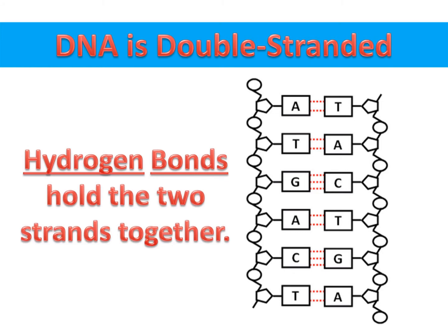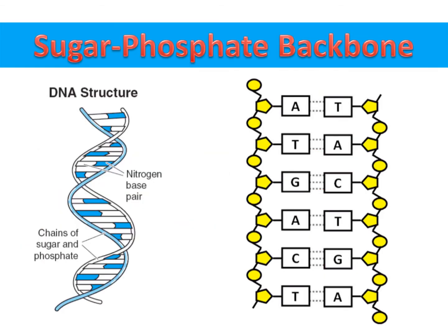DNA is a double-stranded molecule. Hydrogen bonds between the nitrogen bases hold the two strands together. Along the outside edges of the DNA molecule, you'll find the sugar phosphate backbone. These chains of deoxyribose sugars and phosphate groups give the DNA structure and help it maintain its shape.